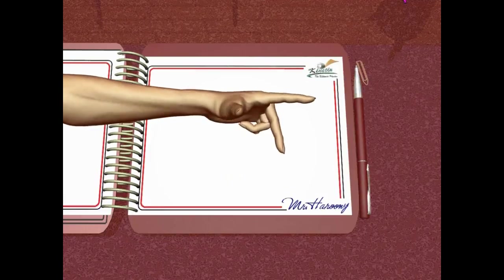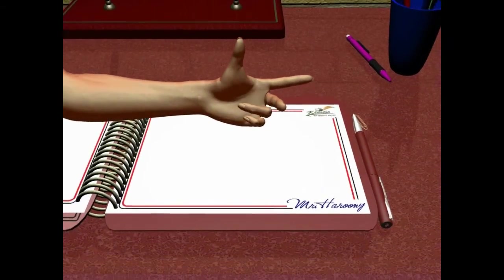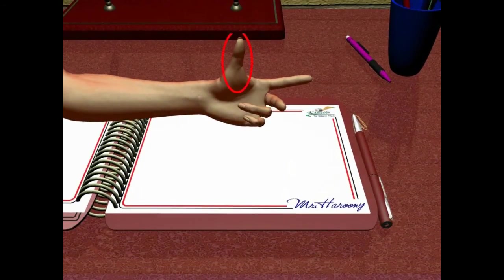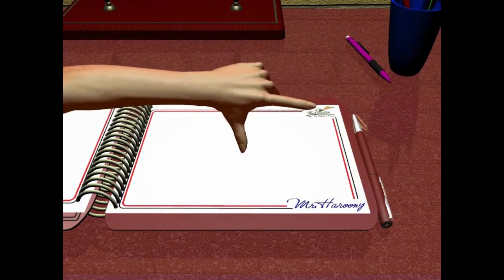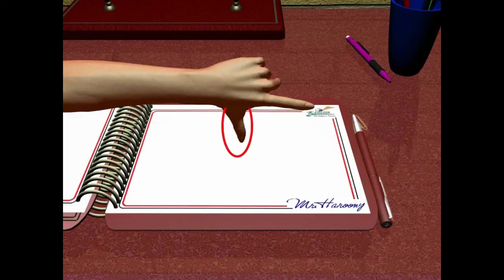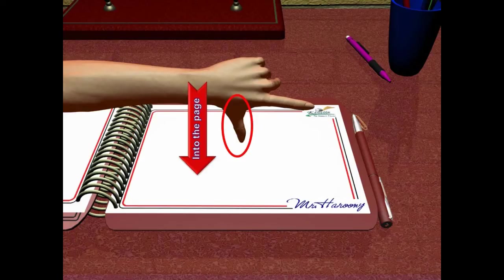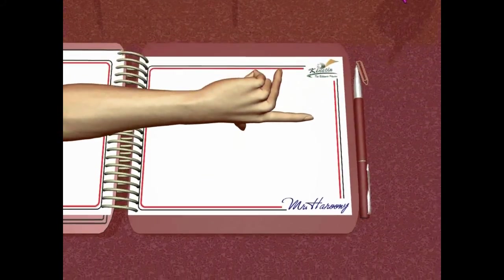What about this hand? It may seem to the student to be pointing upwards, but actually the thumb in this case is pointing out of the page, not upwards. Many students mix up the upwards direction with the out-of-the-page direction. Similarly, some students may think this hand is pointing downwards, but actually the thumb is pointing into the page, not downwards. We describe directions relative to the page, not relative to ourselves.